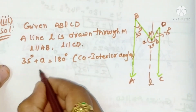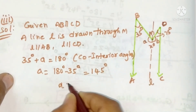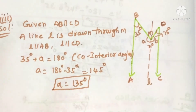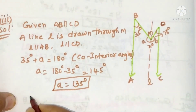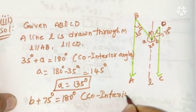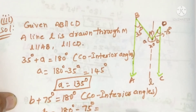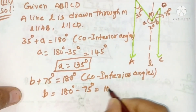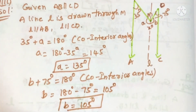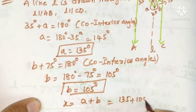So a equals 180 minus 35, which gives a equals 145 degrees. Next, b and 75 degrees are also co-interior angles, so they are supplementary. b equals 180 minus 75, which gives b equals 105 degrees.